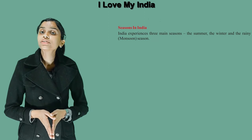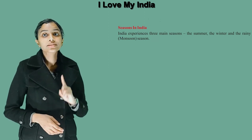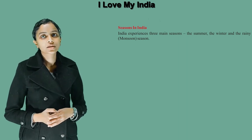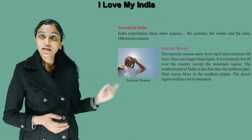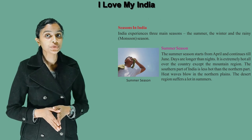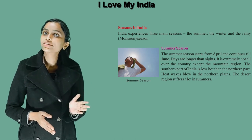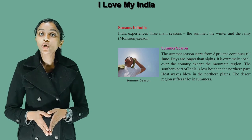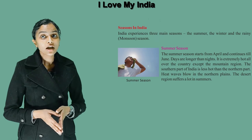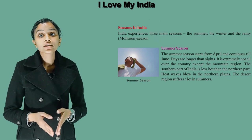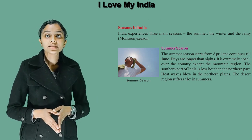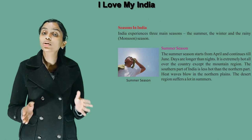India experiences three main seasons: the summer, the winter and the rainy monsoon season. The summer season starts from April and continues till June. Days are longer than nights. It is extremely hot all over the country except the mountain region. The southern part of India is less hot than the northern part. Heat waves blow in the northern plains. The desert region suffers a lot in summers.